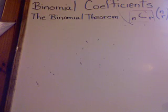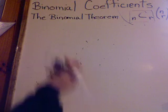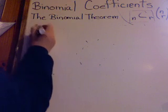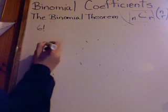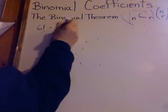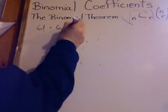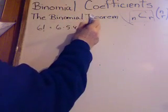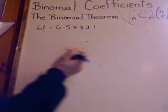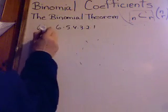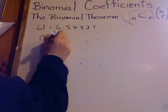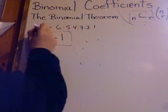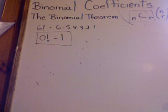Before we get started, let's review factorials. Do you remember what 6 factorial means? It's 6 times 5 times 4 times 3 times 2 times 1. And do you remember the definition of 0 factorial? That's defined as 1, and that's a special rule you have to remember.